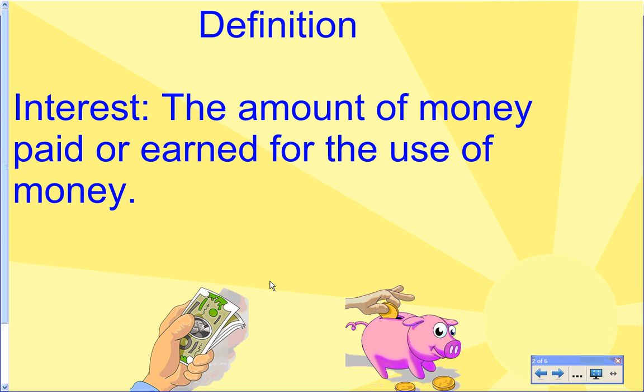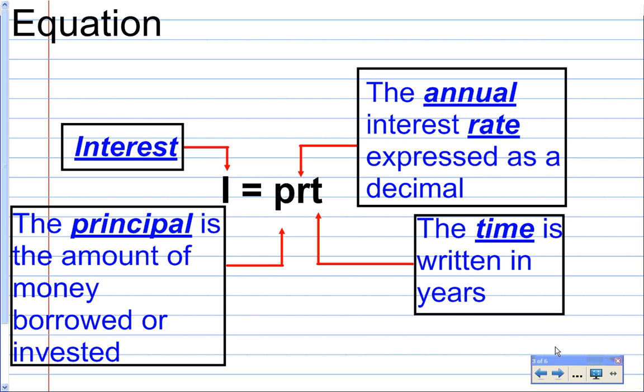So let's get started. Here's just a simple definition of interest: the amount of money paid or earned for the use of money. So you're either letting someone else use your money, or you're using someone else's money. And here's the equation we're going to be using today. The equation is I equals PRT. The I, of course, stands for interest.